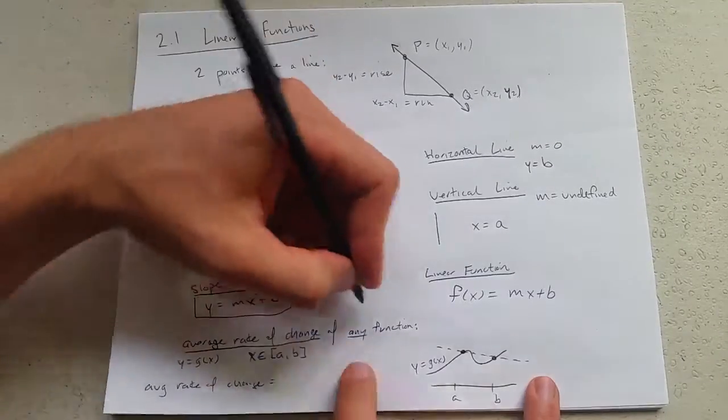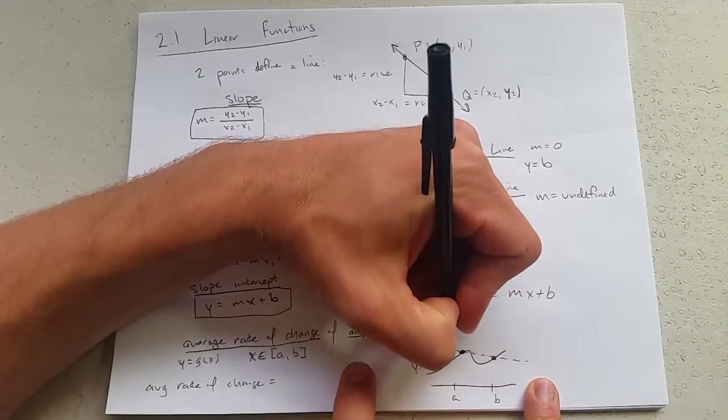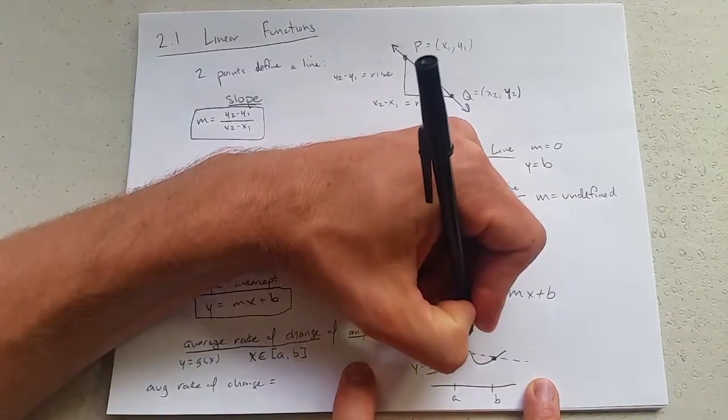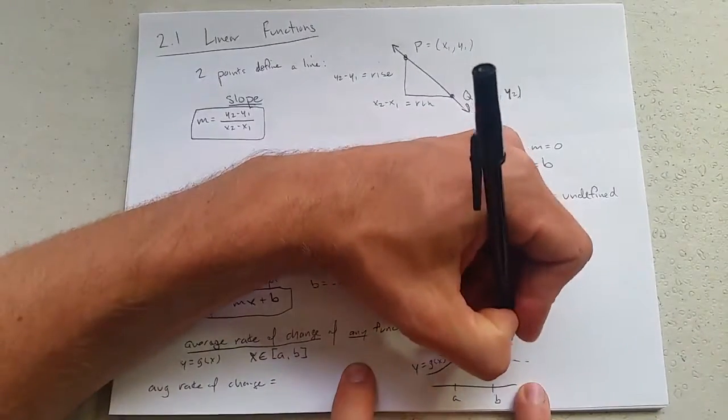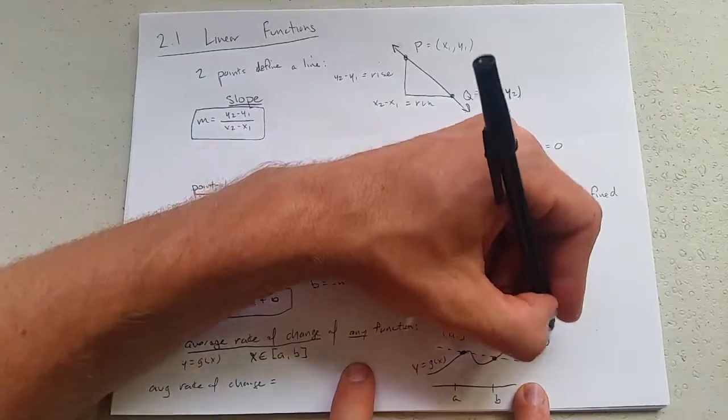We're going to go with the, well, we'll relabel these. This is a comma g of a. And this point is b comma g of b.